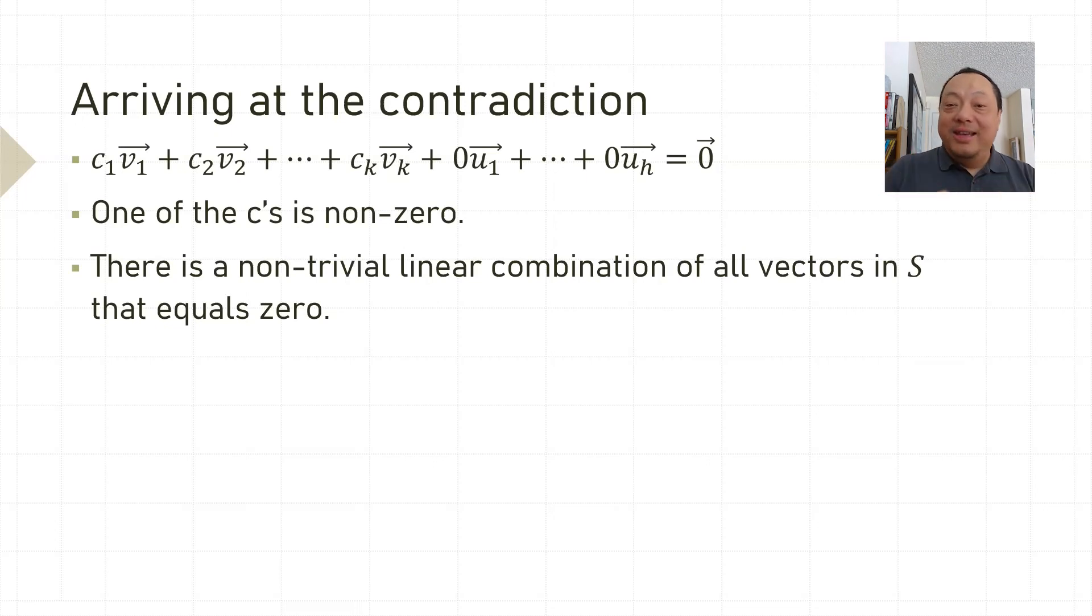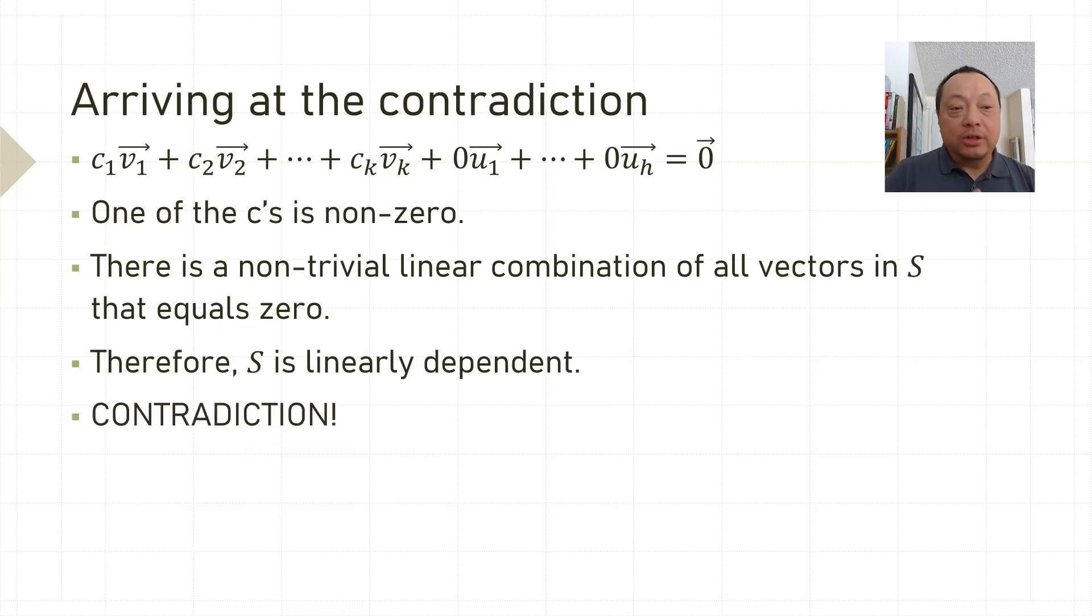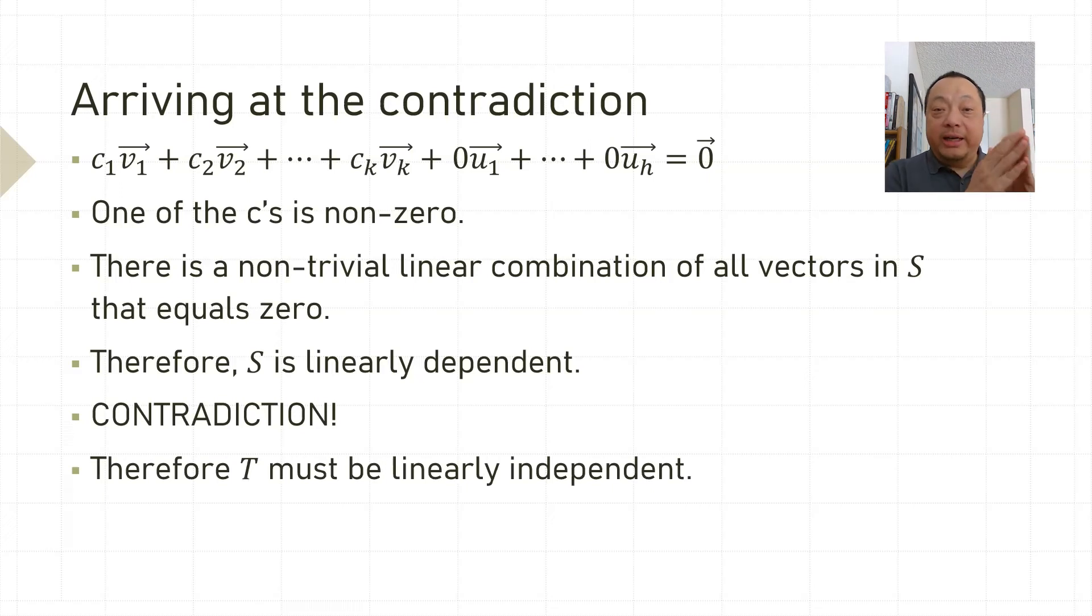Thus, this is a non-trivial linear combination of all the vectors in S that equals 0. Meaning S is linearly dependent. We got our contradiction. Therefore, the suppose not at the beginning must have been bad and T must be linearly independent.